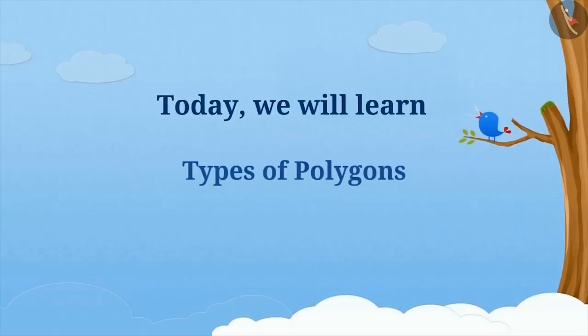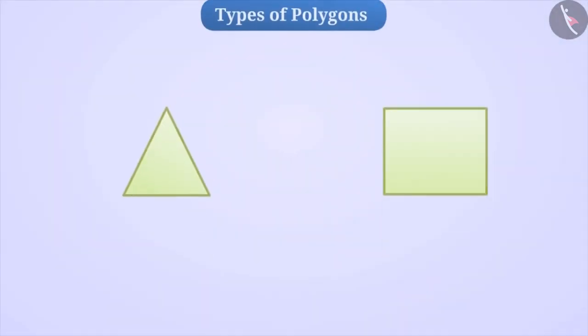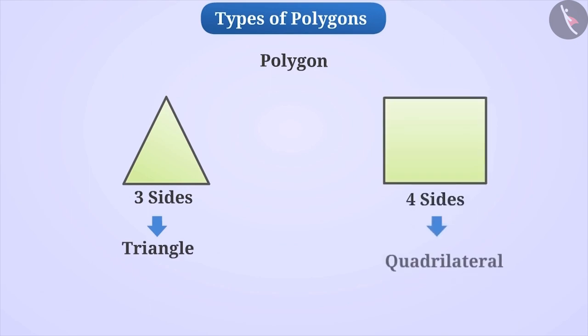Today, we will learn about the types of polygons. A polygon is a closed figure made up of line segments. For example, a polygon with three sides is a triangle, a polygon with four sides is a quadrilateral, etc.